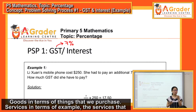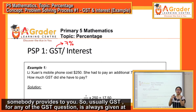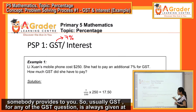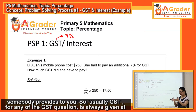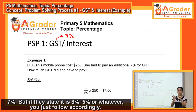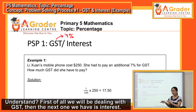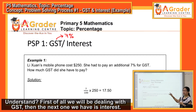Goods refers to things that we purchase; services refers to, for example, the service that somebody provides to you. So usually for any GST questions, it's always given at 7%, but if they state it is 8%, 5%, or whatever, you just follow accordingly. So first we'll be dealing with GST, then the next topic is interest.